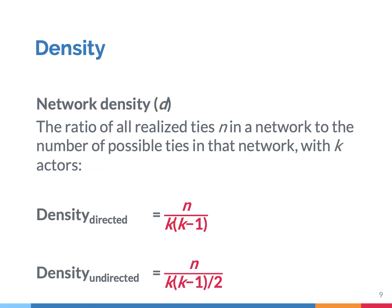Network density captures the ratio of all realized ties in a network to the number of possible ties in that network. The network density measure D ranges from 0 — where there are no ties between actors, so the network is extremely fragmented — to 1, where all actors are connected to each other, so very cohesive.